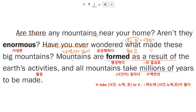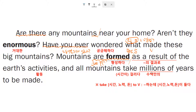Mountains are formed — 산은 형성됩니다. 산은 만드는 게 아니라 만들어지는 거죠. 이런 것을 'be + 과거분사(pp)'의 형태, 수동태라고 합니다. 'As a result of' — 뭐의 결과로. 뭐의 결과로 산이 형성됩니까? 'The Earth's activities' — 지구의 활동에 의해서, 활동의 결과로 형성이 되더라. 지구의 활동 — 화산 활동도 있겠고 여러 가지 활동이 있죠. 이 활동이 산을 만들게 됩니다.